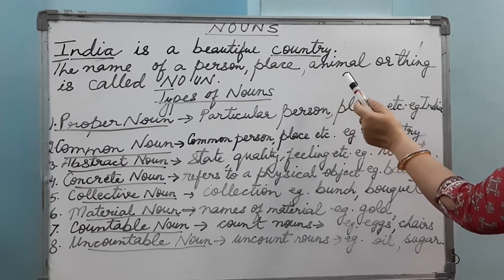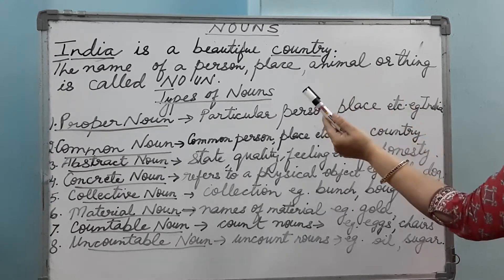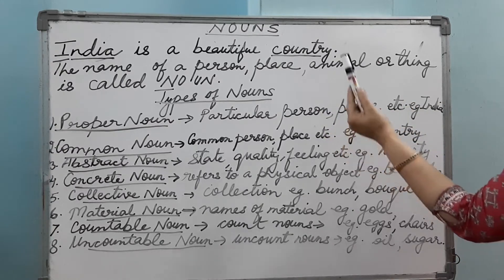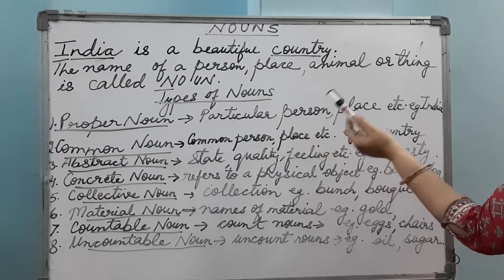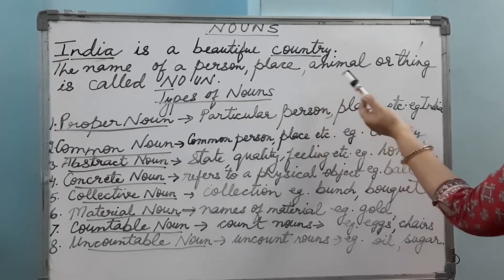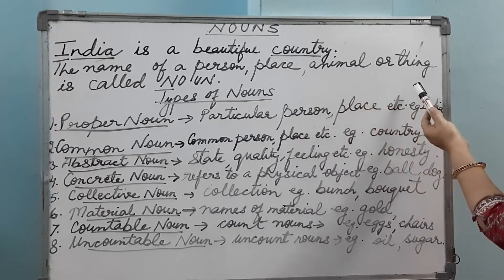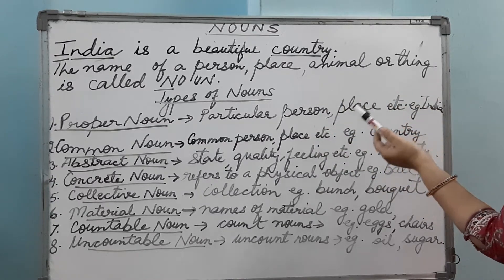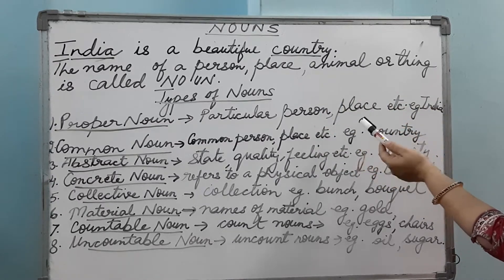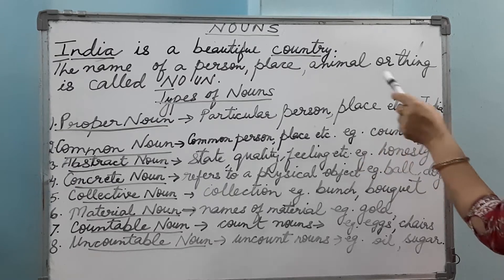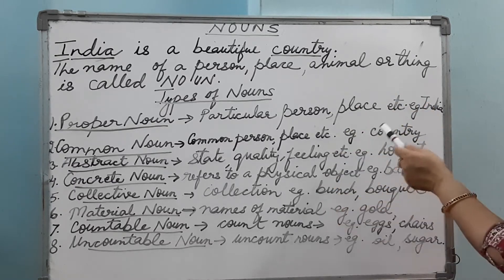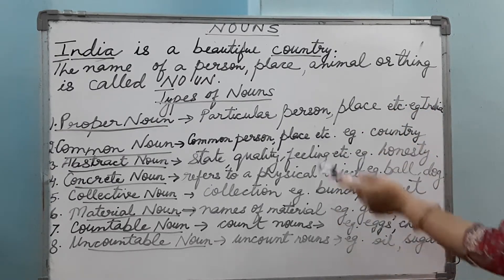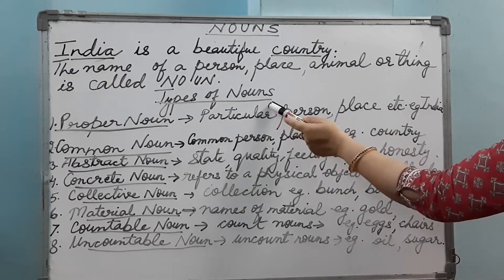You all know that all names — whatever name it is — whether it can be of a person, of a place, of an animal, or a thing, it is called a noun. Now, how many types of nouns are there? We are going to discuss that. Types of nouns.